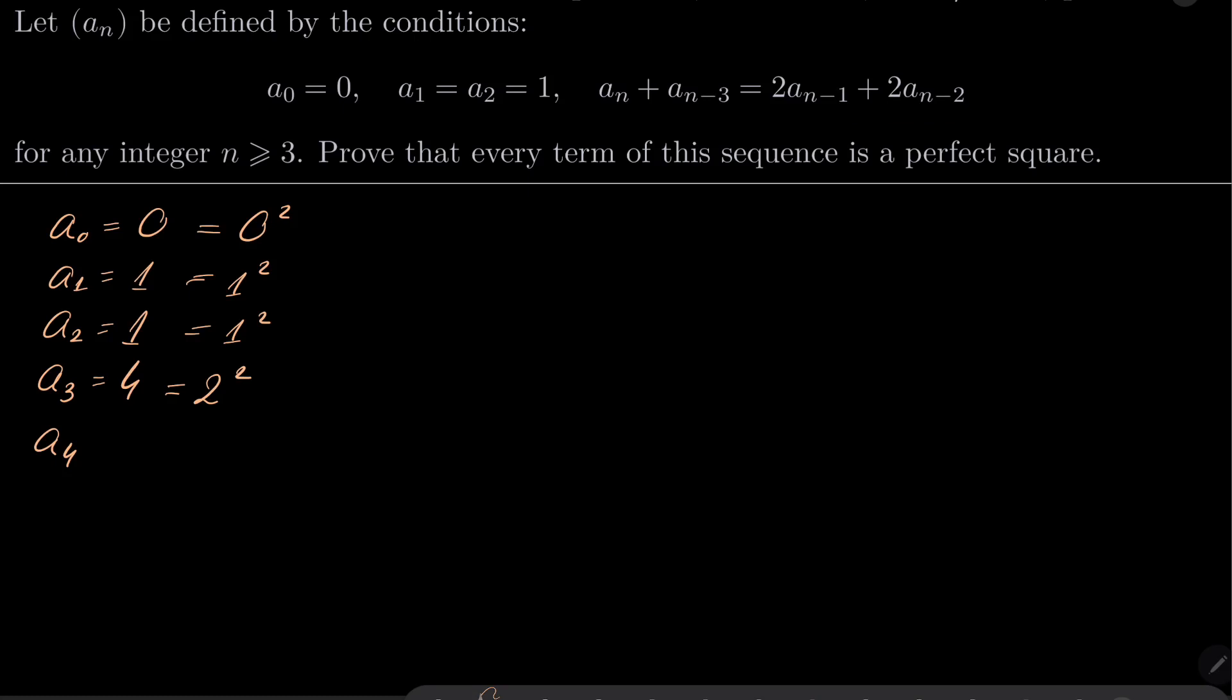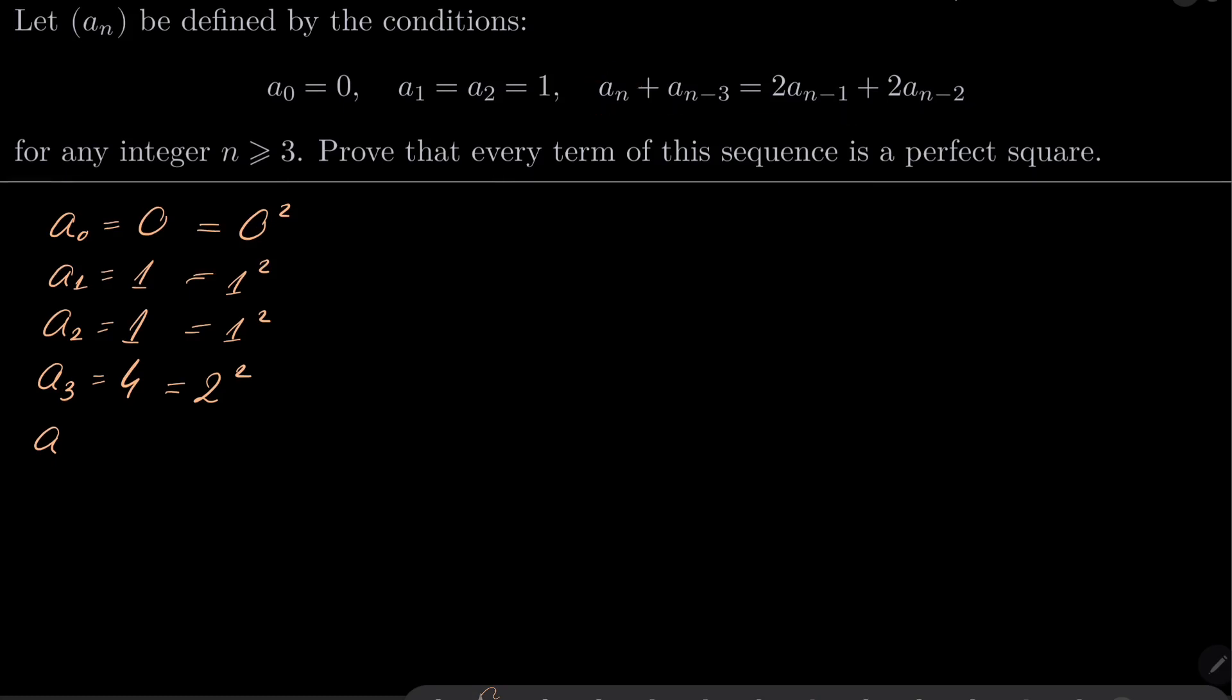From this recursion we can find a_n in terms of three previous terms. a_4 turns out to be 9, which is 3 squared. a_5 will be 25, which is 5 squared. a_6 will be 64, which is 8 squared. You probably see what happens: 0, 1, 1, 2, 3, 5, 8. What is that? Well, it's a Fibonacci sequence.